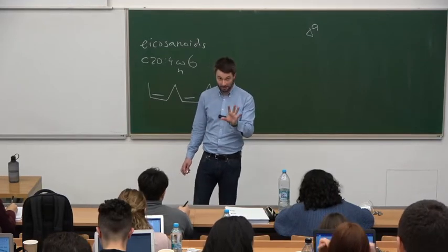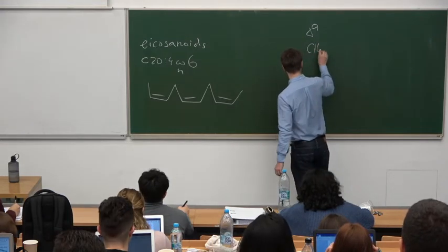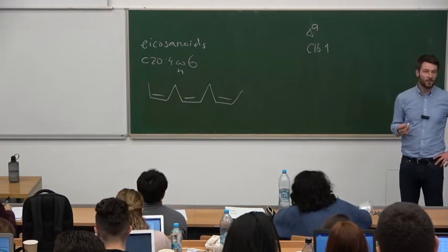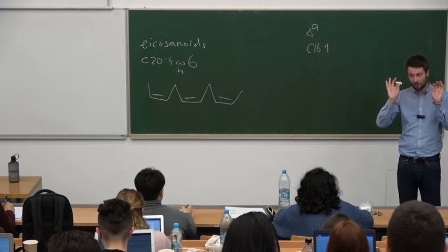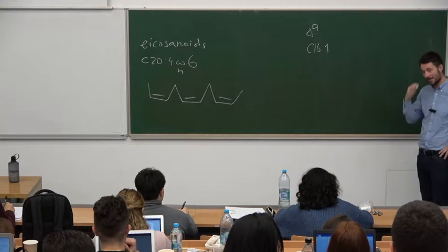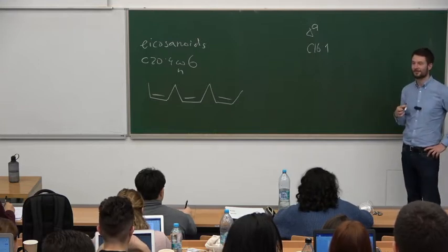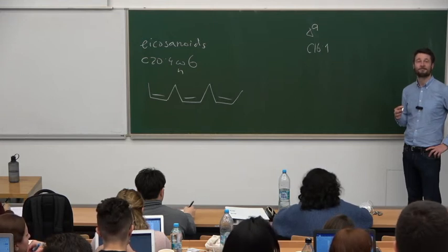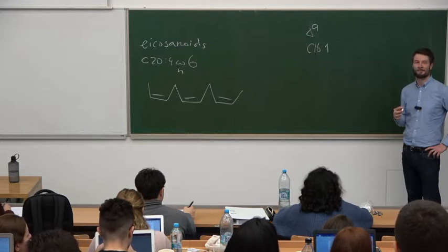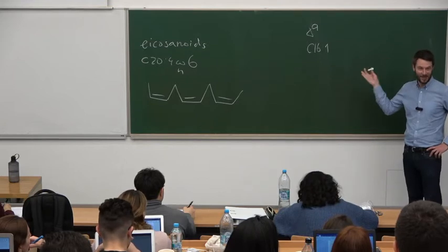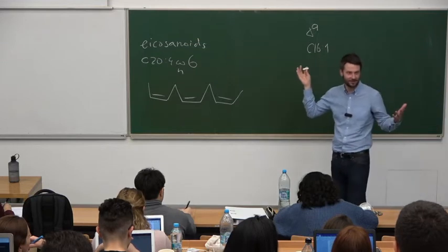Alpha-linolenic acid is actually an omega-3 acid — C18:3, omega-3 — while gamma-linolenic is C18:3, omega-6. They have basically nothing in common; one is omega-6, the other is omega-3, but for some historic reasons they're called alpha-linolenic and gamma-linolenic. After desaturating linoleic to gamma-linolenic acid, we then elongate it by two carbons to get C20:3, omega-6. No change in double bonds, no change in the omega.